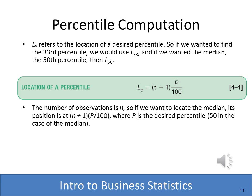Quartiles divide data into quarters: 25%, 50%, and 75%. A decile divides data into tenths — 10%, 20%, and so on — and then we have percentiles as the broadest concept.